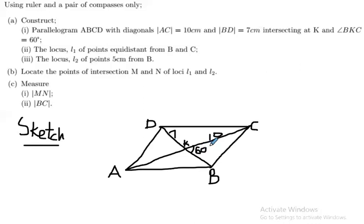So here is the sketch of the question. This will serve as a guide as we embark on the main construction. The idea is that we start by constructing the diagonals — we draw a horizontal line of length 7 centimeters. Since we know the diagonals bisect each other, we bisect that line of length 7 centimeters, which is diagonal BD, and at the center we construct an angle of 60 degrees.